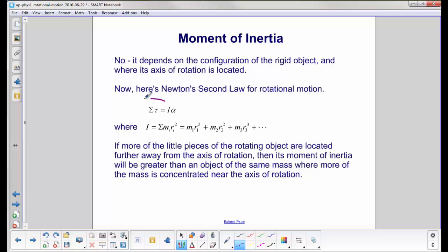Here we now have Newton's second law for rotational motion. The sum of the torques on an object equals I times alpha, where I is the summation of all these little masses that make up the object. Now we have a whole paragraph here telling us what we're talking about.